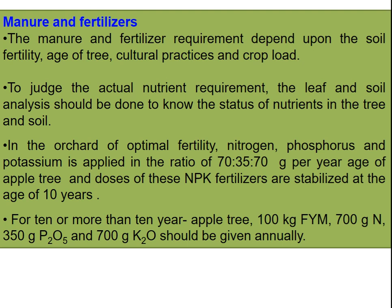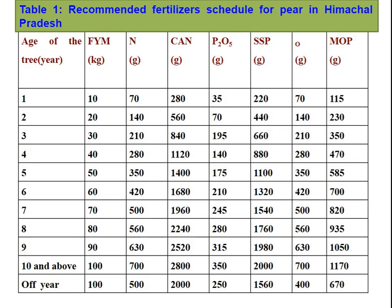For trees of 10 or more years, 100 kg of FYM, 700 grams of nitrogen, 350 grams of phosphorus, and 700 grams of potassium should be given annually. This is the chart for the recommended fertilizer schedule of pear in Himachal Pradesh.